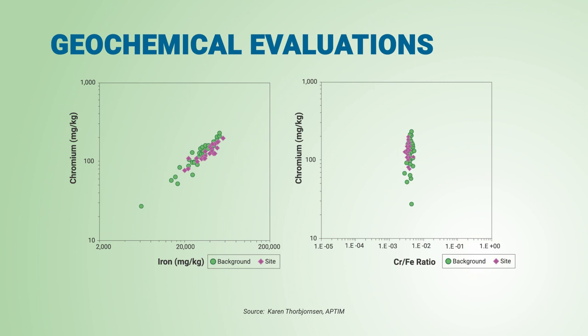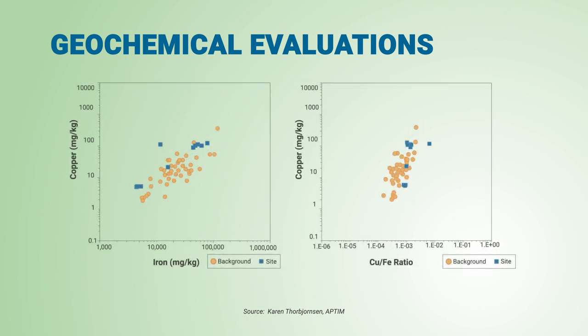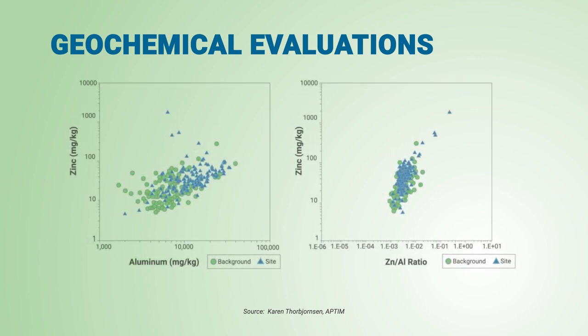Chromium concentrations in soil at this site were determined to be naturally occurring. Note that all of the site samples' chromium-iron ratios are similar to those of the site-specific background samples. At this site, one sample has an anomalously high copper-iron ratio. This sample doesn't have the highest copper concentration, but it still may be impacted by copper contamination, and it has more copper than expected based on its iron oxide content. And at this site, three samples have anomalously high zinc-aluminum ratios that exceed the range of background zinc-aluminum ratios. Zinc contamination is suspected for these three samples.